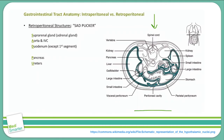C is for colon. Importantly, only the ascending and descending parts of the colon are outside the peritoneum. The transverse and sigmoid colon are intraperitoneal. K is for kidneys. E is for esophagus. And R is for rectum.